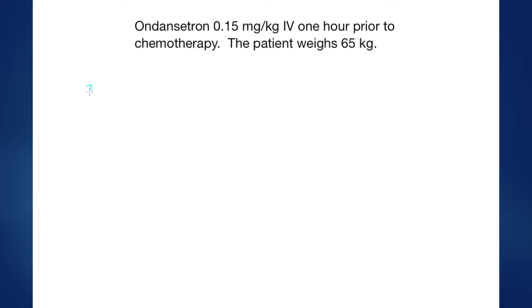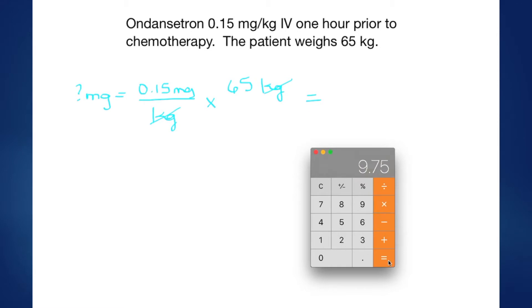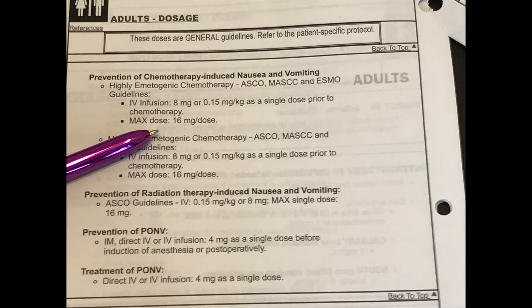So we're going to calculate how many milligrams of this medication I will need to draw up. Quickly doing my math, 0.15 milligrams per kilogram is my order and I have a patient who's 65 kilograms. I now know that I have to draw up 9.75 milligrams of medication. Going back to the monograph I see there's a max dose of 16 milligrams, of which this is a safe dose.